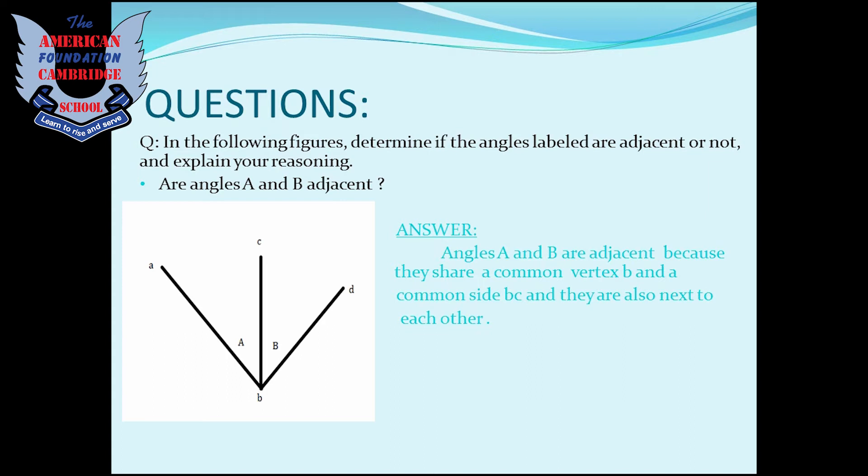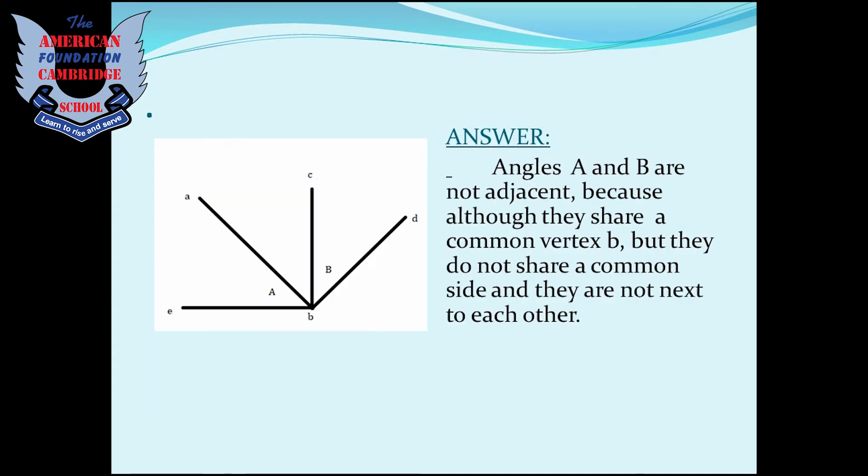Look at this figure. Tell me, are angles A and B adjacent here? The answer is angles A and B are not adjacent because although they share a common vertex B, they do not share a common side and they are not next to each other.